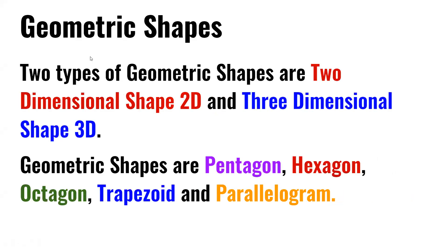Two types of geometric shapes are 2D two-dimensional shapes and three-dimensional shapes or 3D. Geometric shapes include the pentagon, hexagon, octagon, trapezoid, and parallelogram.